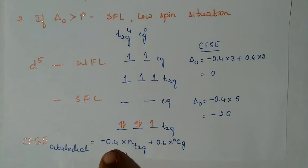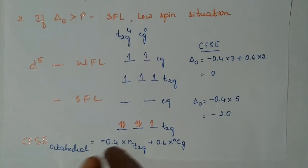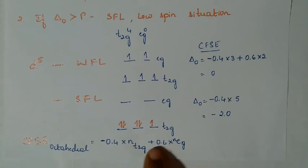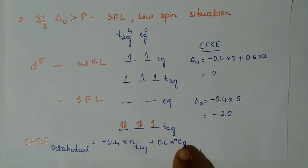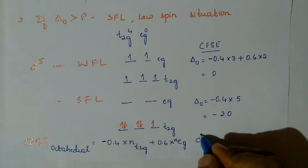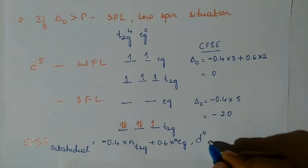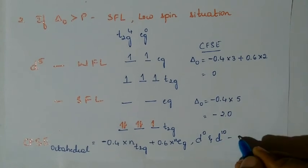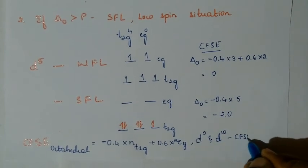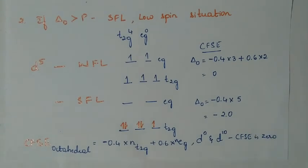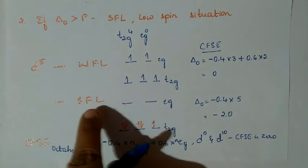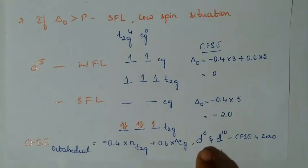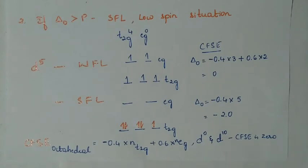To summarize CFSE for octahedral complexes: CFSE = (−0.4 × electrons in T2G) + (+0.6 × electrons in EG). For D0 and D10, CFSE is 0 in both strong and weak field cases. For D5 with weak field, CFSE is also 0. These are special cases worth noting.